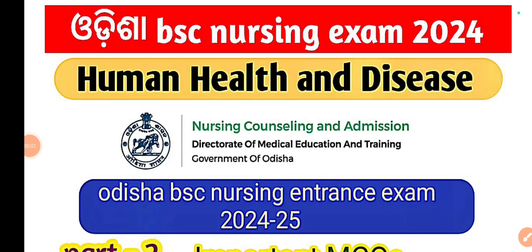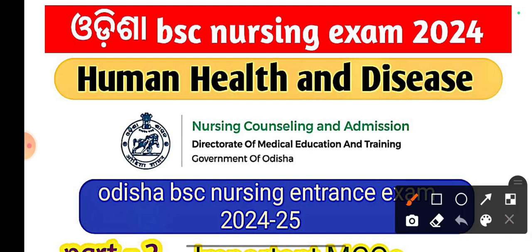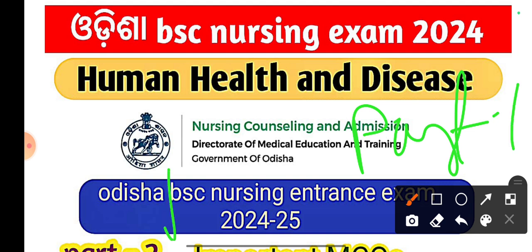Hello everyone and welcome back to our channel. Now we are going to talk about the human health and disease chapter, part 1 and part 2. We are going to talk about separate subjects: physics, chemistry, biology, and English. Nursing aptitude is very important.